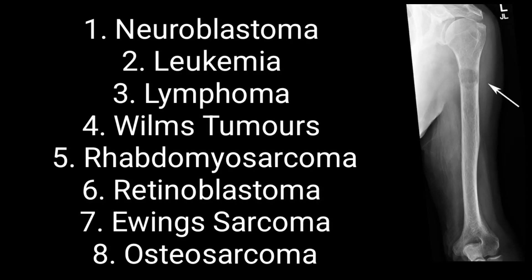Rhabdomyosarcoma is a cancer of soft tissue and can be seen in muscles. It is also a cancer of connective tissue involving tendons and cartilage. Specifically, rhabdomyosarcoma involves the muscles which are attached to the bone.